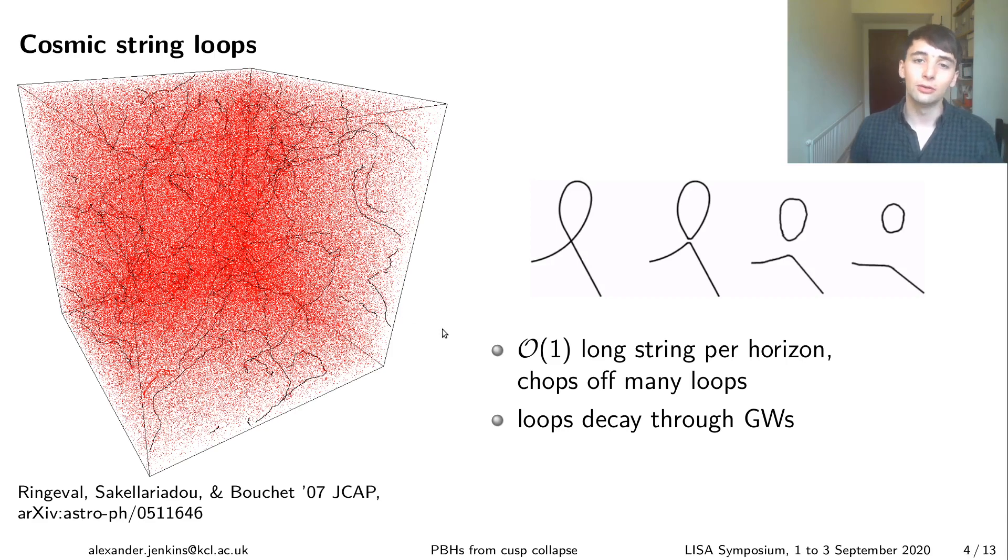So suppose you form a bunch of cosmic strings, you have a phase transition that forms them, what happens then? Well typically from simulations what people find is that you have a few, so sort of order one long cosmic strings per Hubble volume, which is shown in black in this simulation here. So when I say long strings I just mean strings which are larger than your Hubble volume so it looks like they just go on forever.